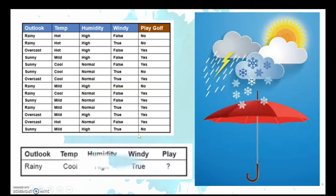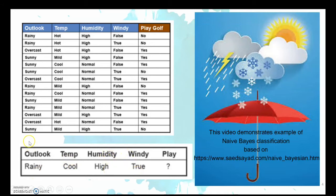We are given new data to decide whether the person should play golf or not. When the temperature is cool, humidity is high and windy is true. Let's try to look at it and see whether we can decide to play golf or not.